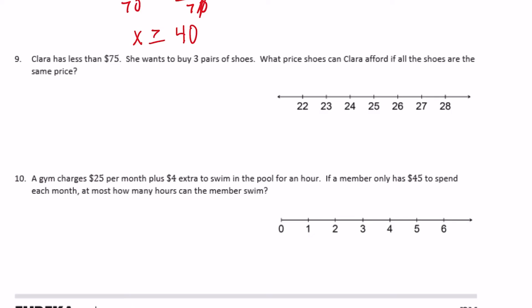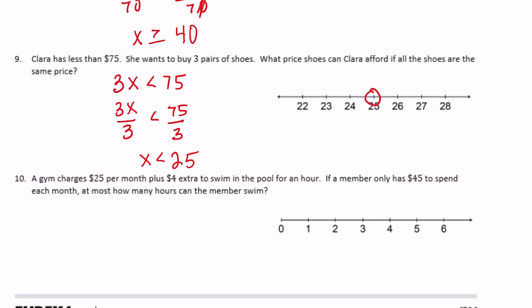Number 9: Clara has less than $75 and wants to buy three pairs of shoes at the same price. Three pairs of shoes need to cost less than $75 total. So 3x divided by 3 is less than 75 divided by 3, giving x is less than 25. Each pair of shoes must cost less than $25. I leave the circle open because it cannot equal exactly 25.